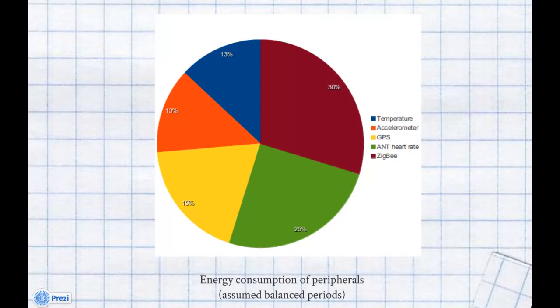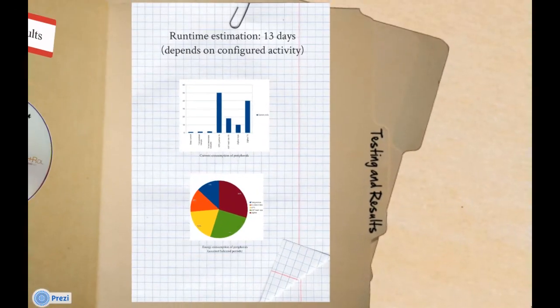This pie chart shows how the energy consumption is split between the peripherals over a long period of time. As each peripheral has its own optimized duty cycle, the power consumption is divided fairly between the peripherals.